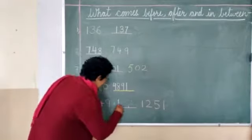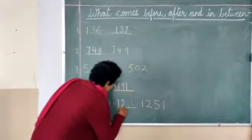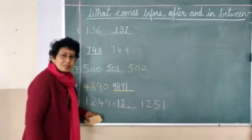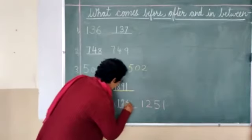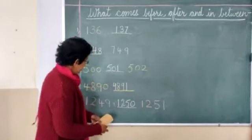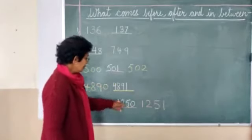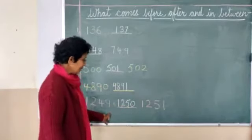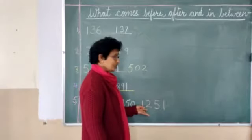First number will remain same. Second number will remain same. Now the third number is going to change. That is 5. 4 after 5. And the last number is 0. That is 1250, and after that 1251.